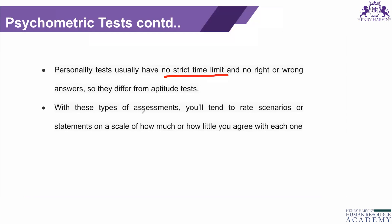That is how personality tests differ from aptitude tests — no time limit and no right or wrong. With these assessments, you rate scenarios or statements on a scale of how much or how little you agree with each one. There will be a statement, and it will ask whether you disagree, agree, or are neutral — you mark your position on that scale.